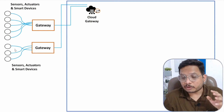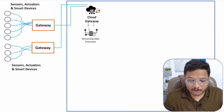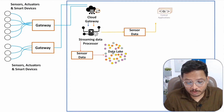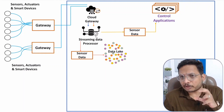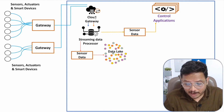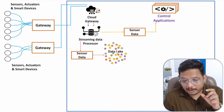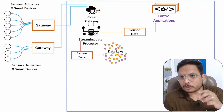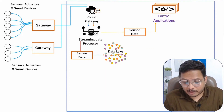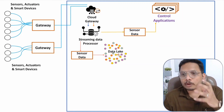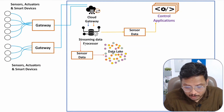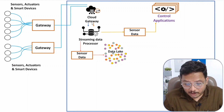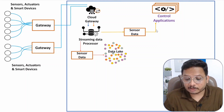The next block is the streaming data processor. The cloud gateway sends the data to the streaming data processor. The streaming data processor ensures data exchange between the cloud gateway and the control applications, as well as between the cloud gateway and the data lake. The data lake will store the data in its natural form — whatever data we store in the data lake is raw data. The streaming data processor also forwards sensed data to the control applications in real-time.